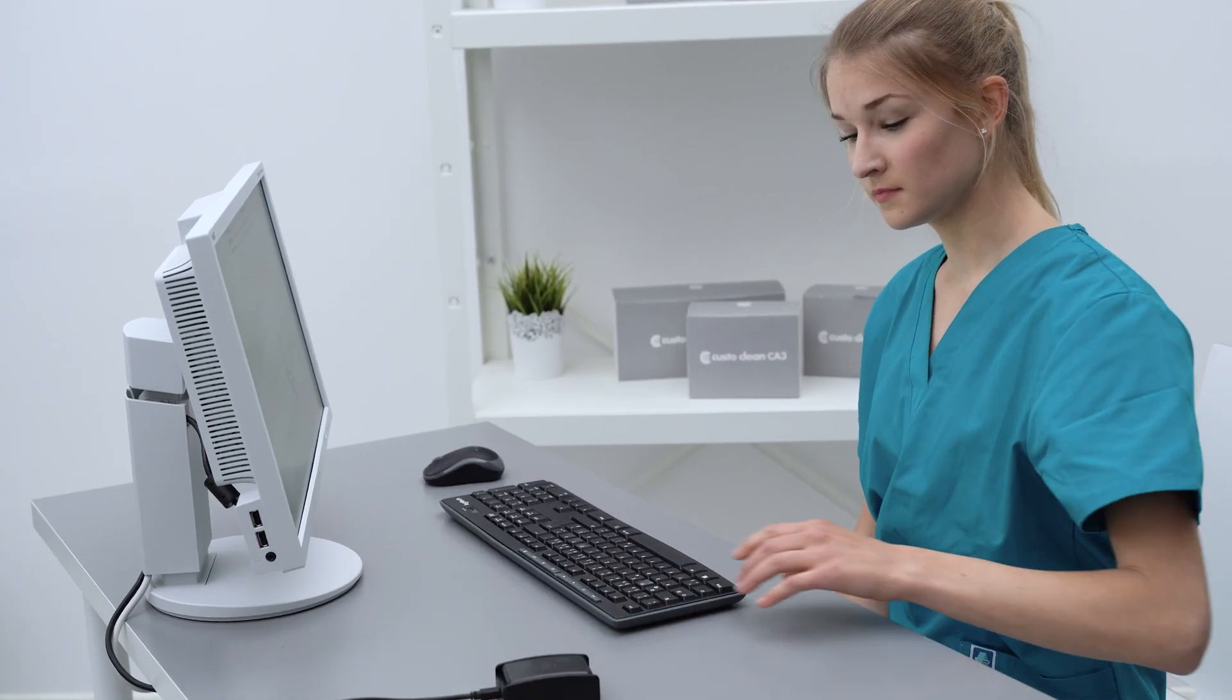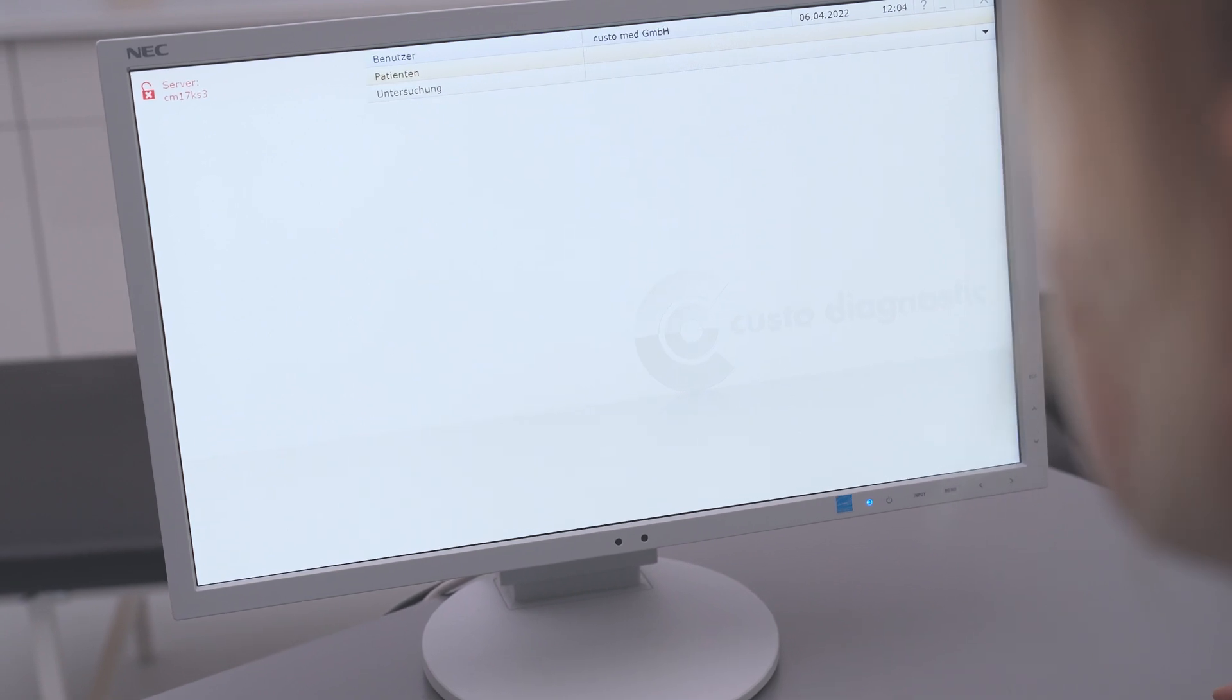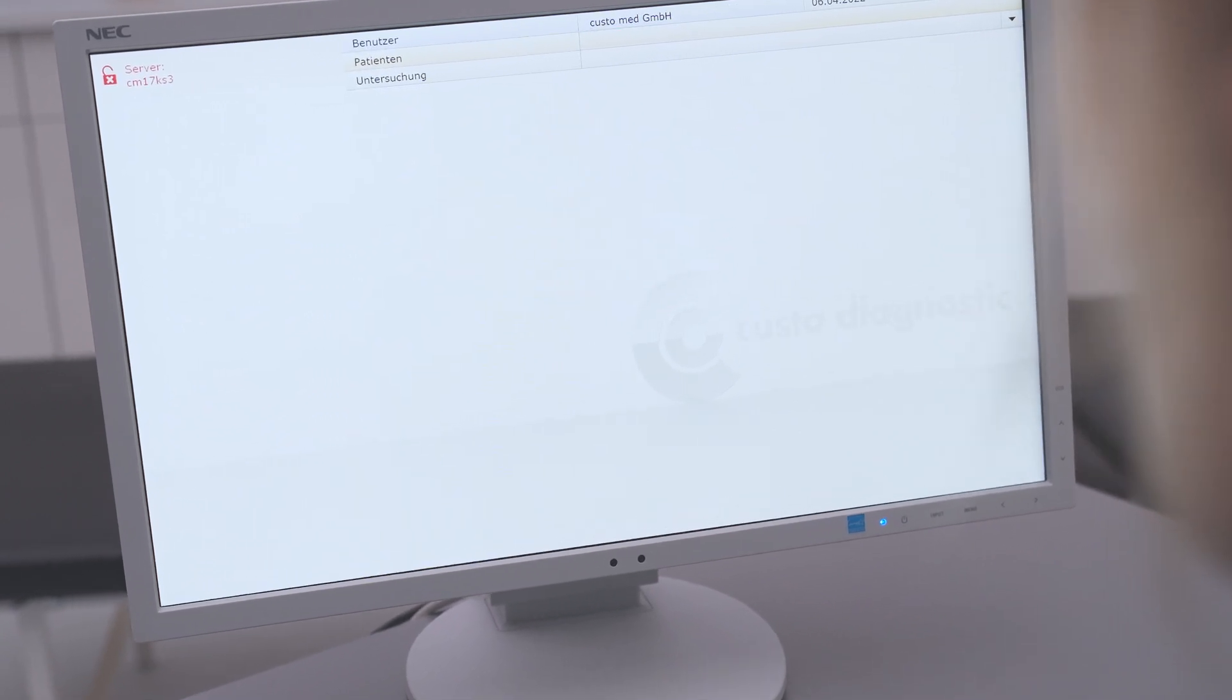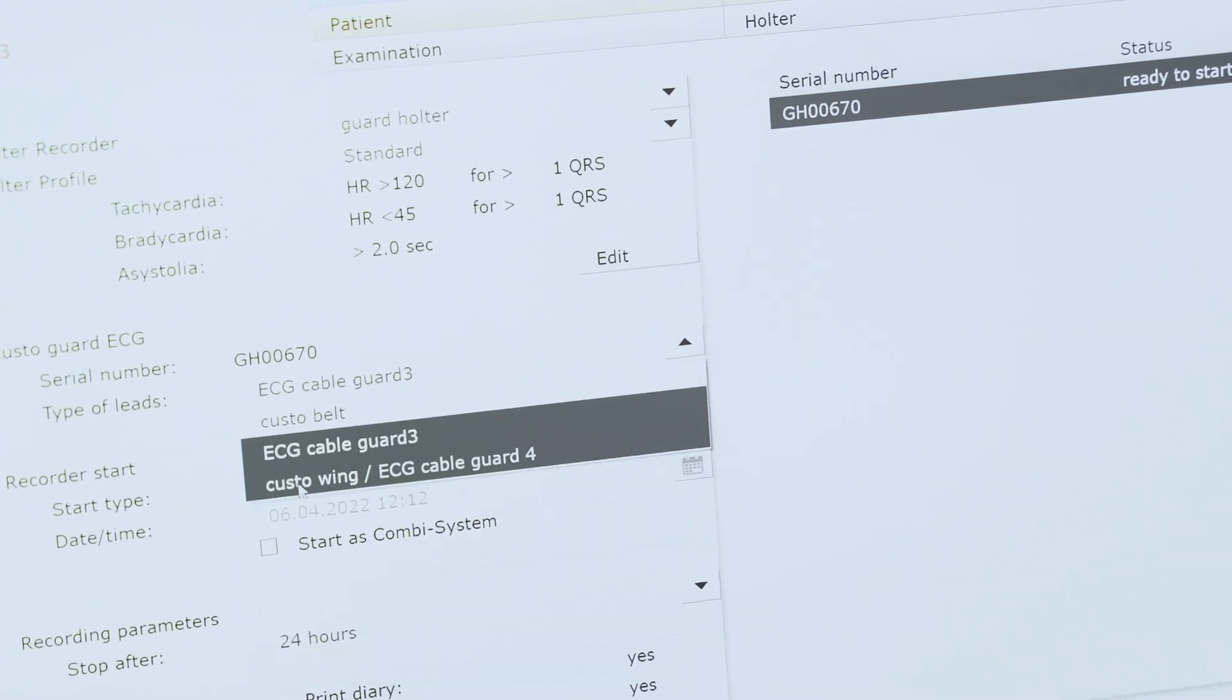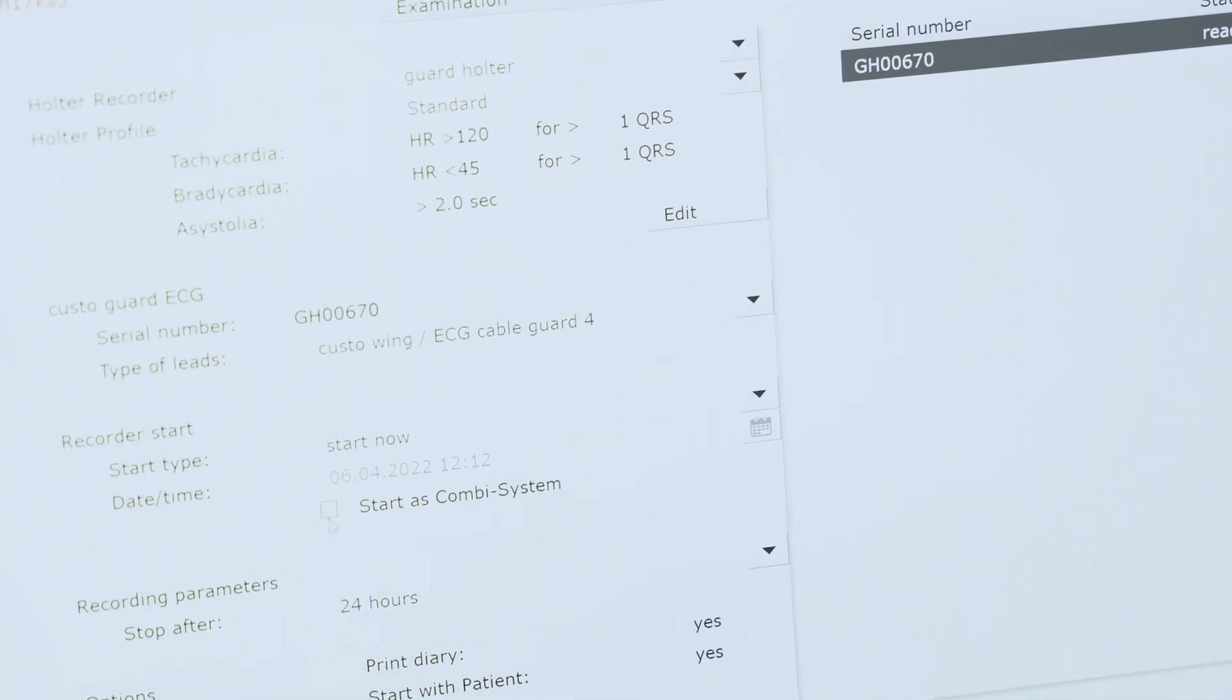Then connect the CustoGuard Halter to the Custo diagnostic software. You can see how this works in the user video CustoGuard Halter or Halter ECG. Specify the desired settings such as the type of lead. Make sure that you continue the process as a combined measurement.